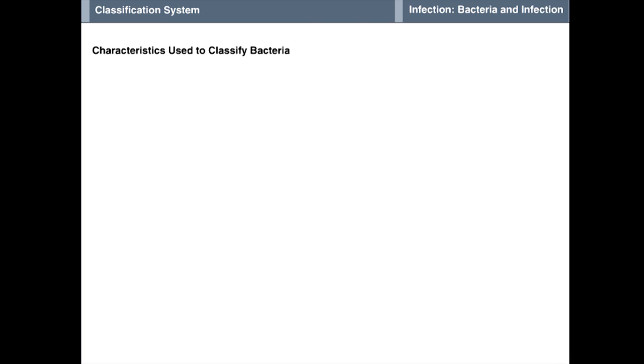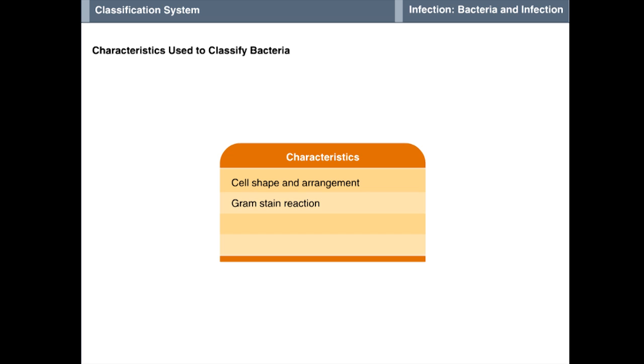The major characteristics used to classify bacteria into genus and species are cell shape and arrangement, gram stain reaction, oxygen requirements, and nutritional and metabolic characteristics.